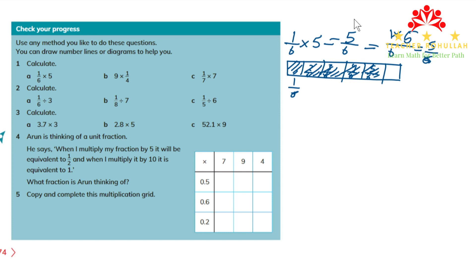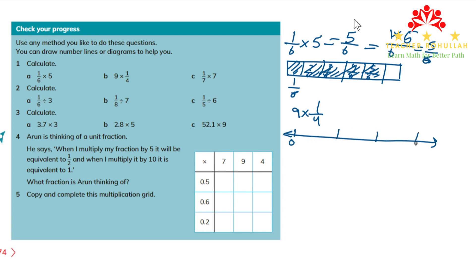For the second one I will use a number line. Part b is nine times one-fourth. I will divide each whole part into four equal parts on the number line. So this is zero, one, two, three, and so on.